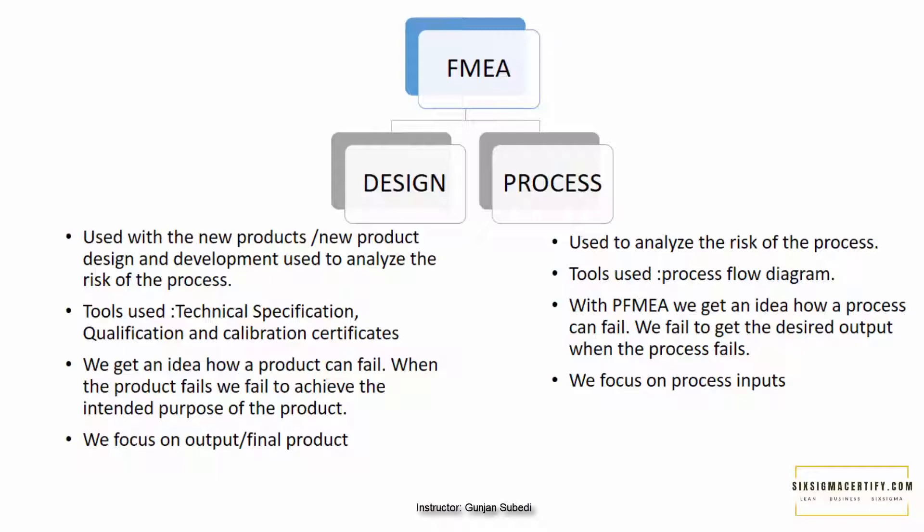With D-FMEA, we get an idea of how a product can fail — when the product fails, we fail to achieve the intended purpose of the product. With P-FMEA, we get an idea of how a process can fail — we fail to get the desired output when the process fails. Overall, with D-FMEA we are focusing on the output or final product, but with P-FMEA we are looking at the process inputs.